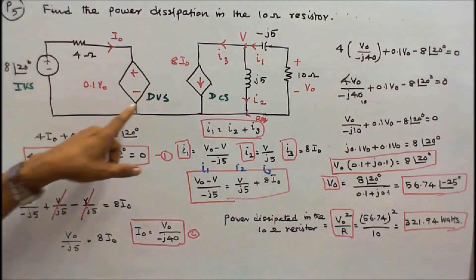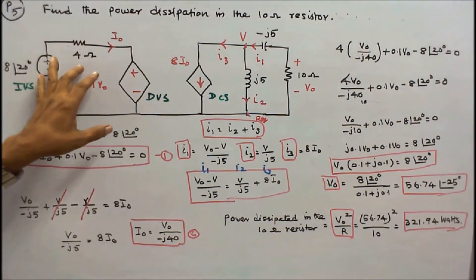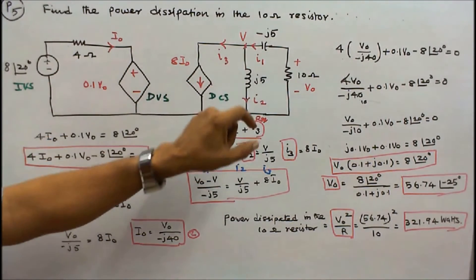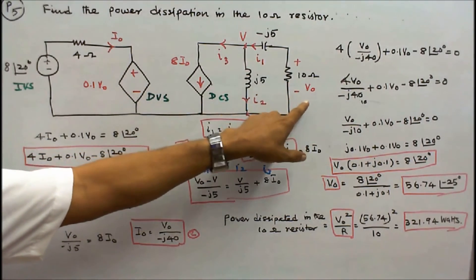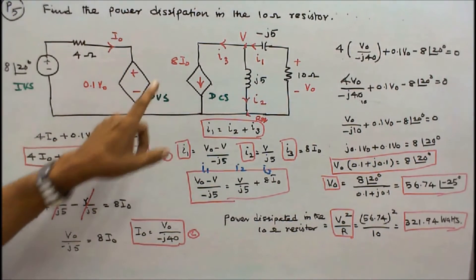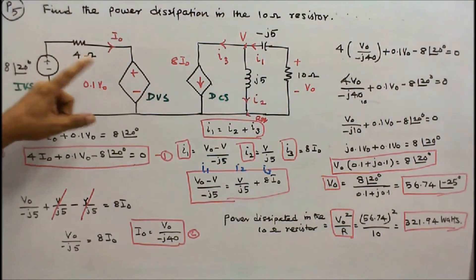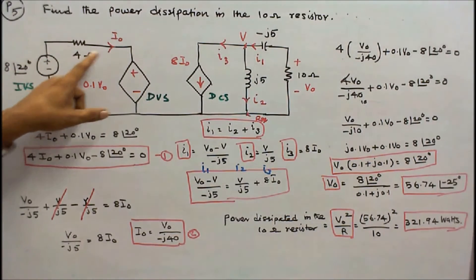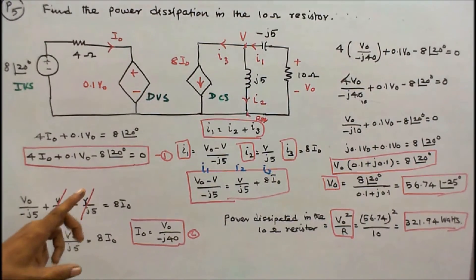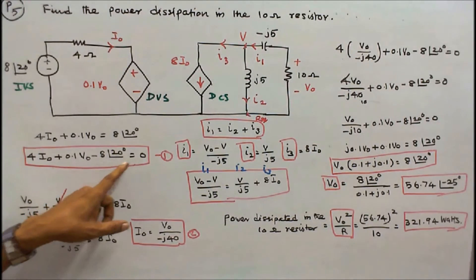Problem number 5: find the power dissipation in the 10 ohm resistor. The circuit consists of one independent voltage source, one dependent voltage source, one dependent current source of 0.1 V0, one 4 ohm resistor, an inductor j5 ohm, and a capacitor minus j5 ohm. The voltage across the 10 ohm resistor is V0 and the dependent current source is 8 times I0. Apply Kirchhoff's voltage law: 4 times I0 plus 0.1 V0 equals 8 angle 20 degrees. This is equation 1.